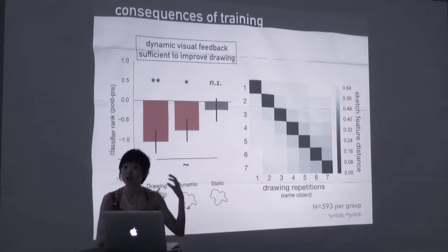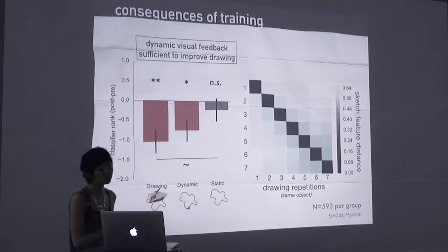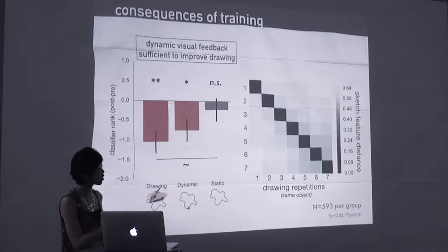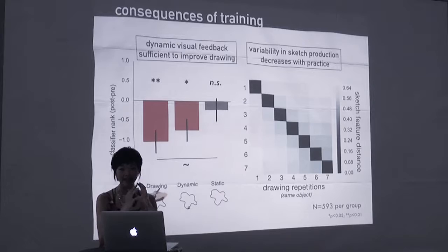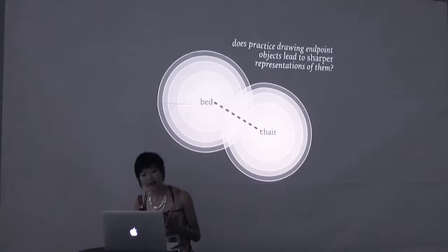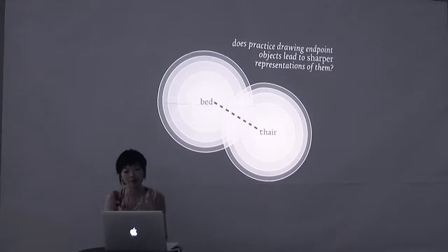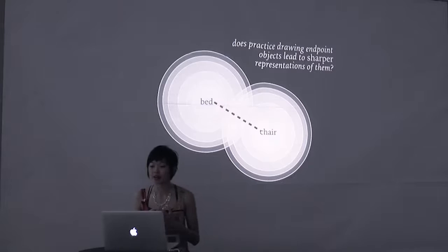To scrutinize these results further, we extracted high-level visual features from the original sketches using the same convolutional neural network. What I'm showing here in matrix form is a time course of the feature distance between successive drawings of the same object, and the increasing gray tinge as you move across the diagonal toward the bottom right indicates that sketch output became less variable as training progressed, consistent with some kind of tightening in the sketch representation of the object. So naturally this made us wonder.